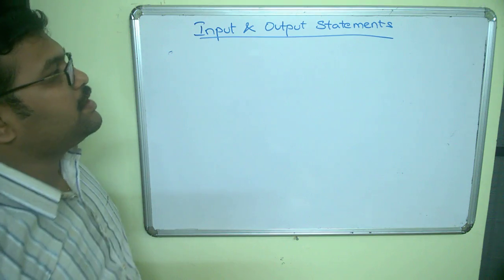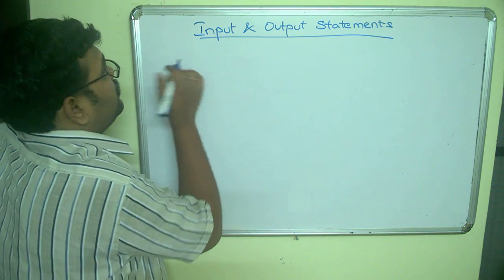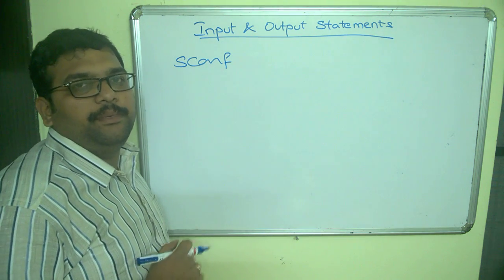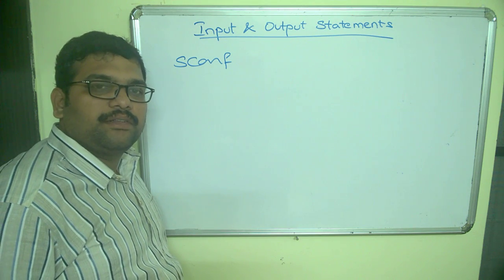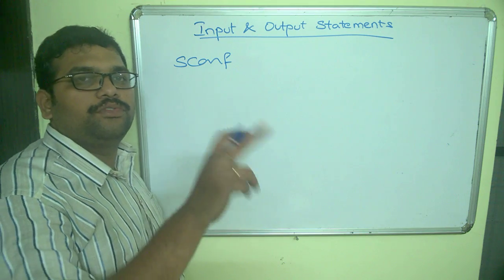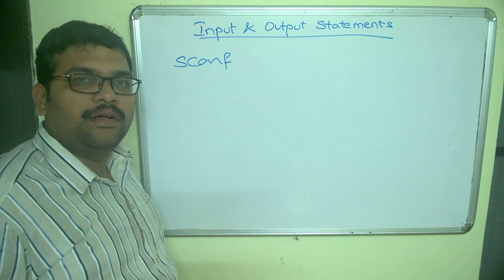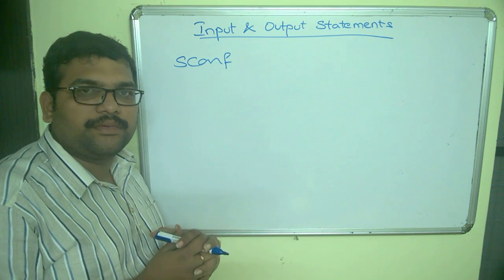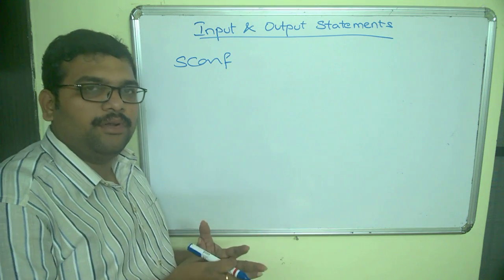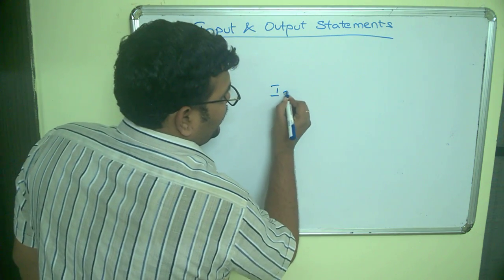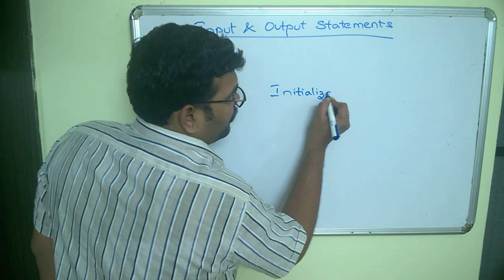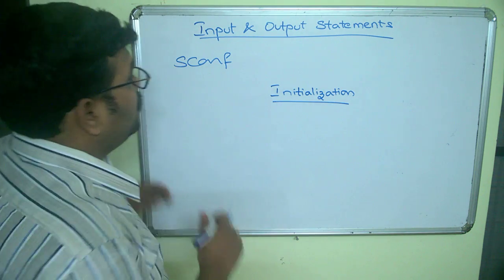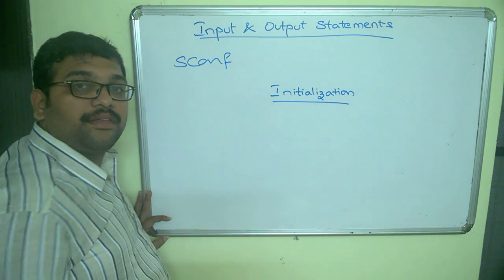Now let us see the standard input function — scanf. Scanf is used to read a value into a variable. As mentioned in the previous session, we must declare all variables before using them in the program. After declaration, we have to assign a value to that variable — without a value there will be no calculations. This assigning of a value is called initialization. Scanf is used to initialize the value at runtime.